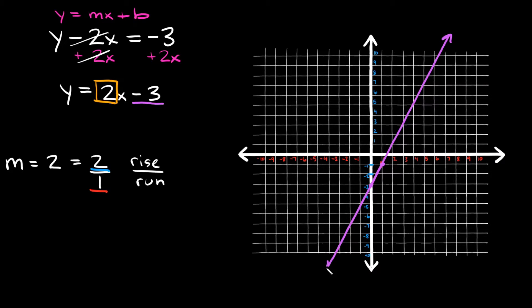Extend the line a bit. This line represents the equation y minus 2x equals negative 3, or equivalently y is equal to 2x minus 3.